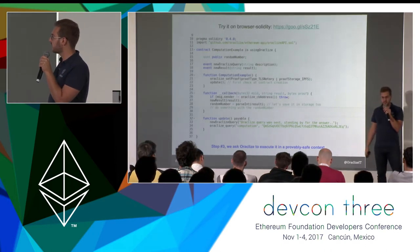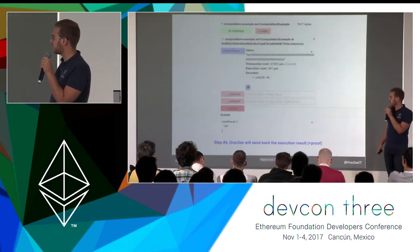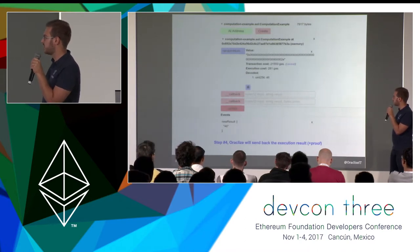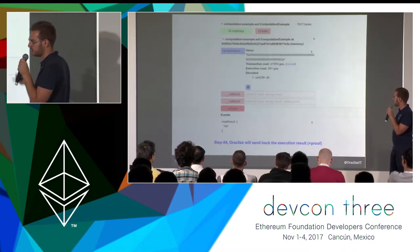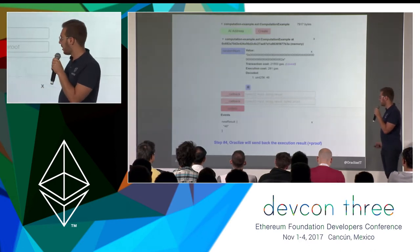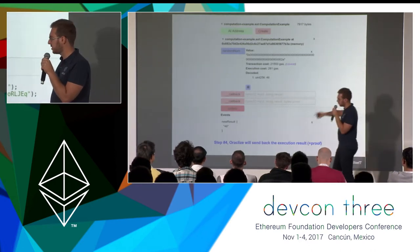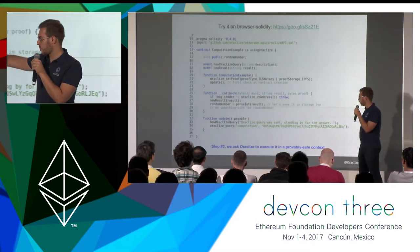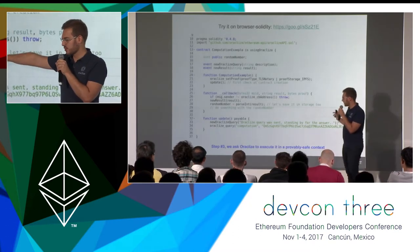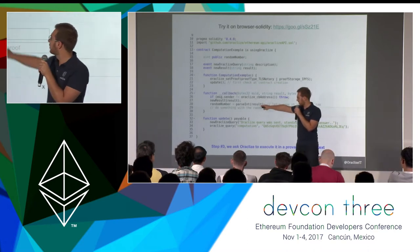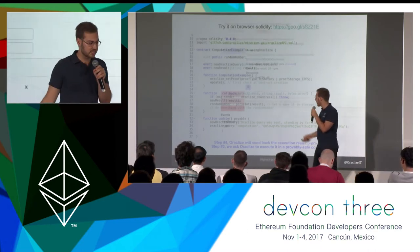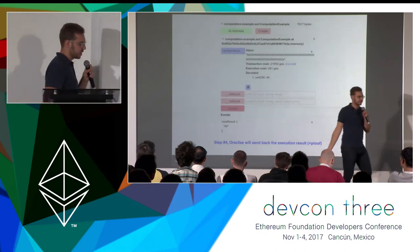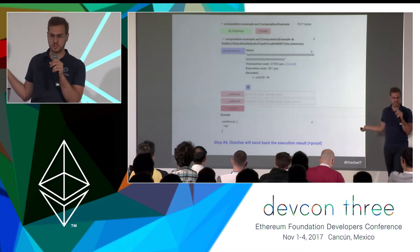This is a demo execution with browser Solidity. The code was executed, the result was 46, and we stored the random number in storage in the Solidity contract. This typically takes a couple of minutes to execute, and the overhead comes from the way it works under the hood.